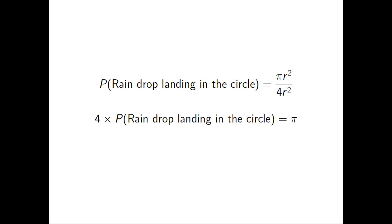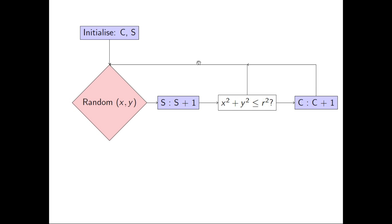Now this is where the Monte Carlo simulation comes in, because we can use a computer to simulate the rain falling in our field. So we start off by initializing C and S, and C is just going to be the number of raindrops that land in the circle, and S is going to be the number of raindrops that land in the square, so all the raindrops.